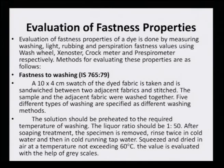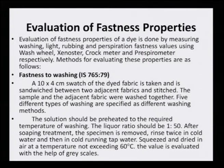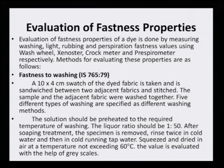For ascertaining washing fastness, a 10 cm by 4 cm swatch of the dyed fabric is taken and sandwiched between two adjacent fabrics and stitched. The sample and the adjacent fabric are washed together. Five different types of washing are specified as different washing methods. The solution should be preheated to the required temperature. The liquor ratio should be 1 to 50. After soaping treatment, the specimen is removed, rinsed twice in cold water and then in cold running tap water, squeezed and dried in air at a temperature not exceeding 60 degrees.